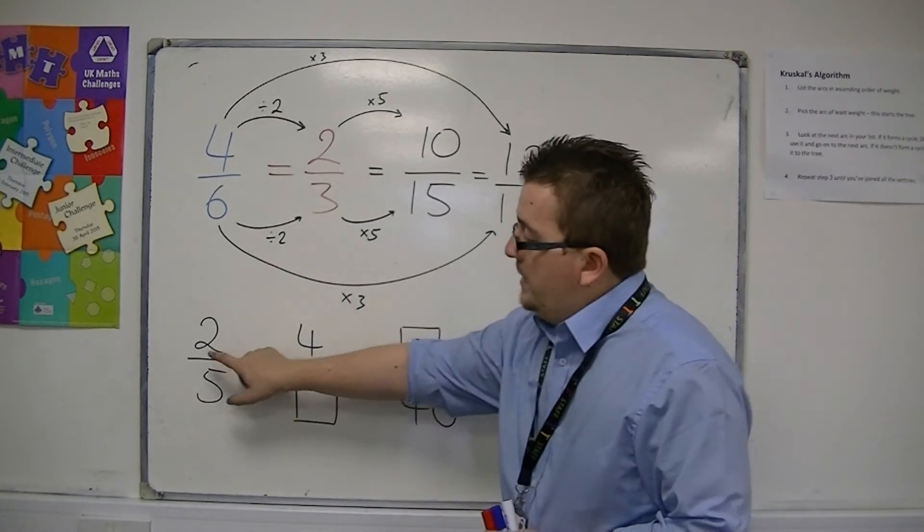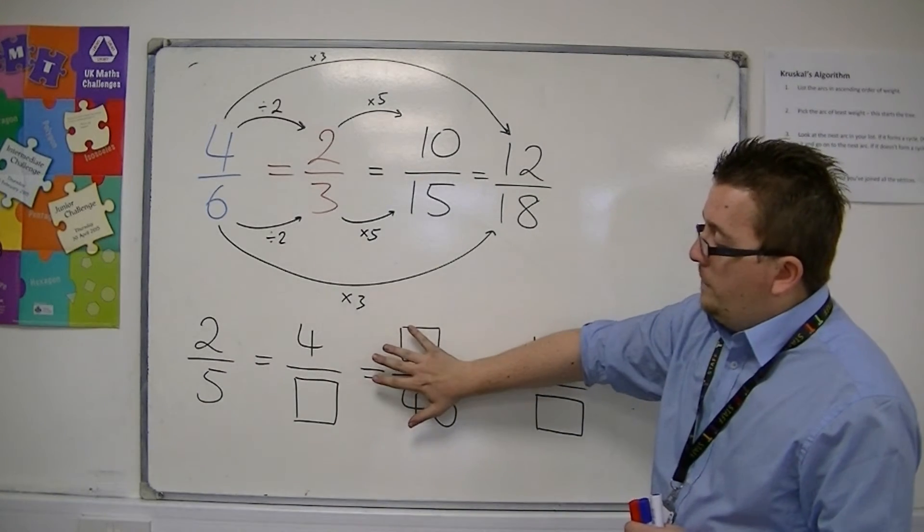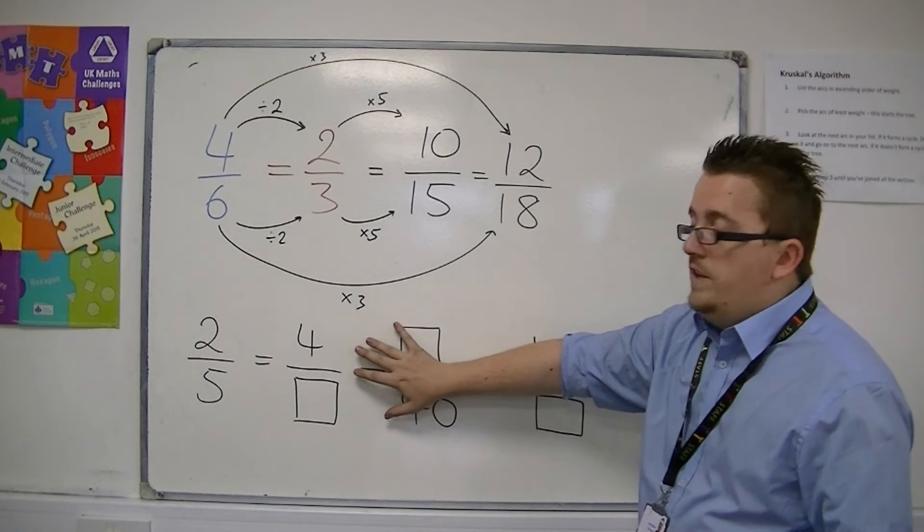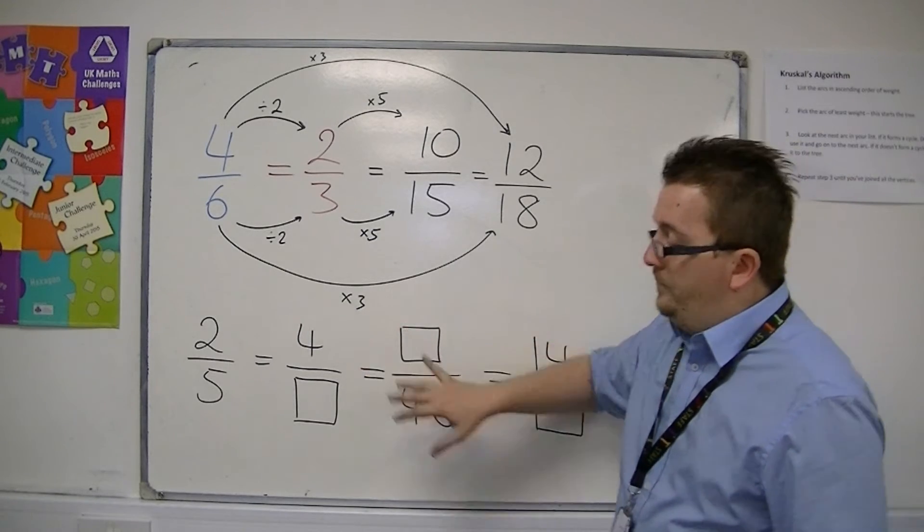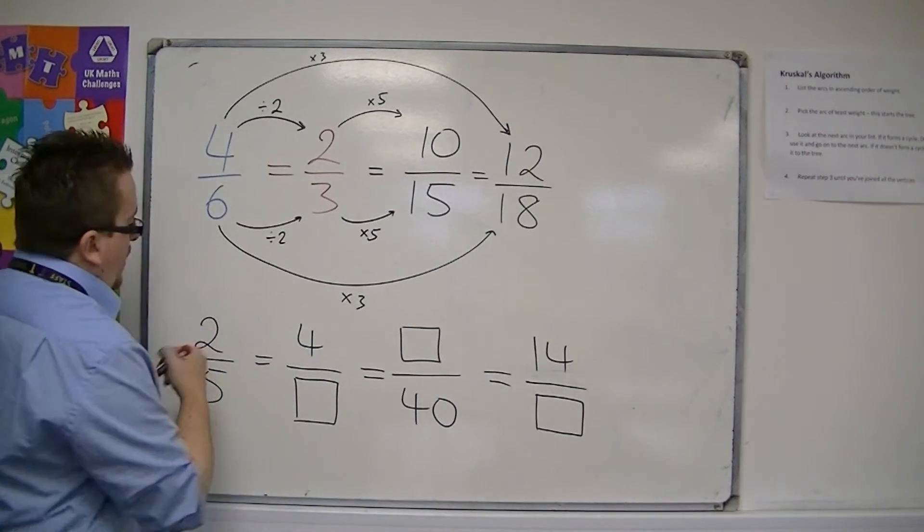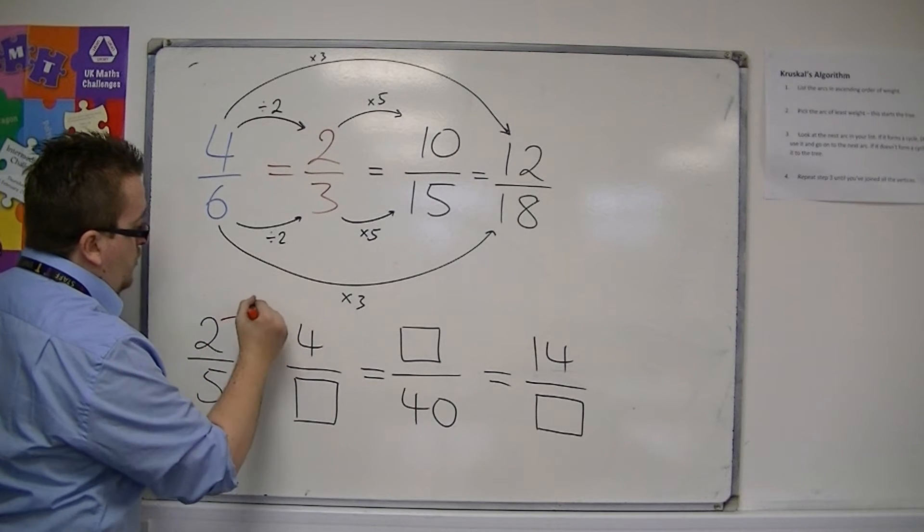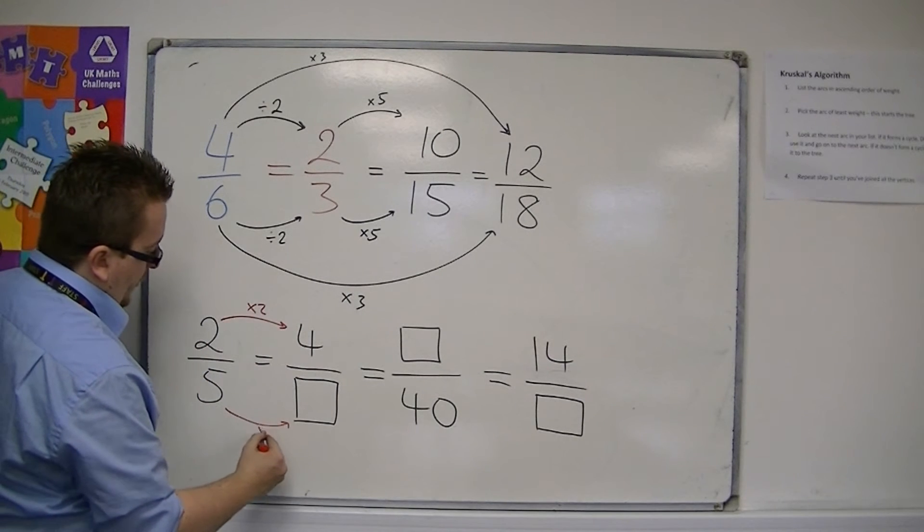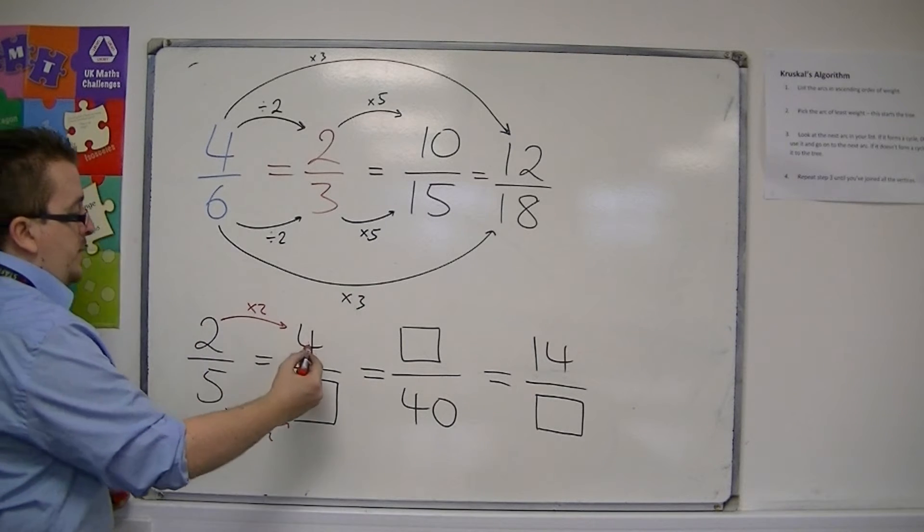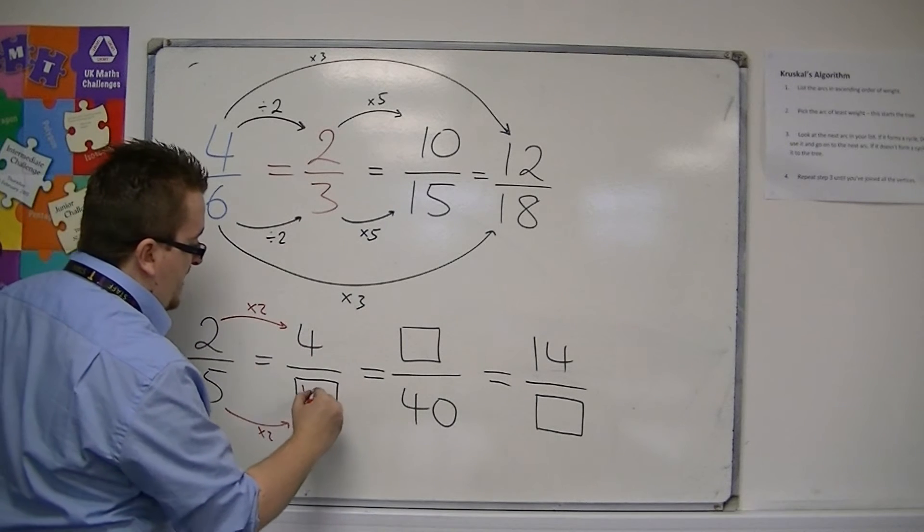In order to get from 2/5 to 4 over something, just ignore the other bits for the moment. You should be able to spot that we'd need to multiply the 2 by 2 and the 5 also by 2. So 2 times 2 is 4, so 5 times 2 is 10.